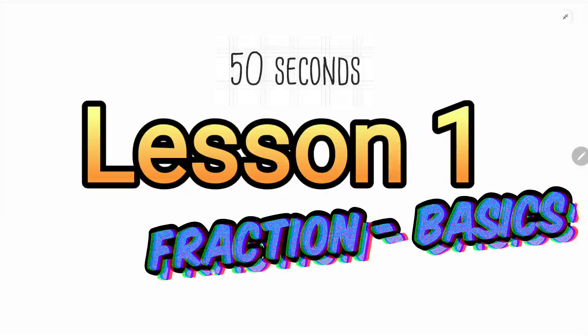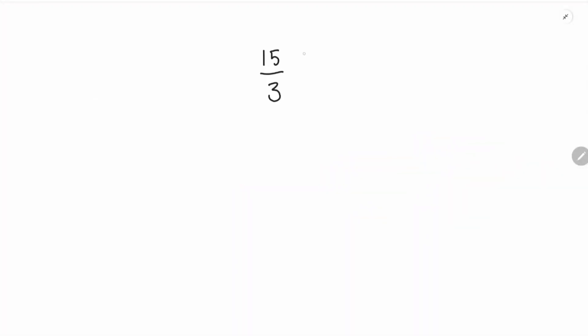Lesson number one is understanding fractions. What does the 15 represent? This is the numerator — and the bottom? Denominator. Once we start using this terminology we can understand fractions a bit more. What's this bar in the middle mean? It's not a mystery symbol, it literally means divide. It's much clearer if we write that as a fraction. The fraction must be thought of as a division, but it's a better format.